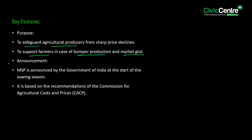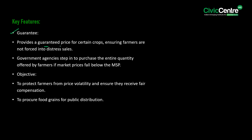MSP is announced by the Government of India at the start of the sowing season, based on the recommendations of the Commission for Agriculture Costs and Prices. It provides a guaranteed price for certain crops, and government agencies step in to purchase the entire quantity offered by farmers if market prices fall below the MSP. The objective is to protect farmers from price volatility, ensure fair compensation, and procure food grains for public distribution.